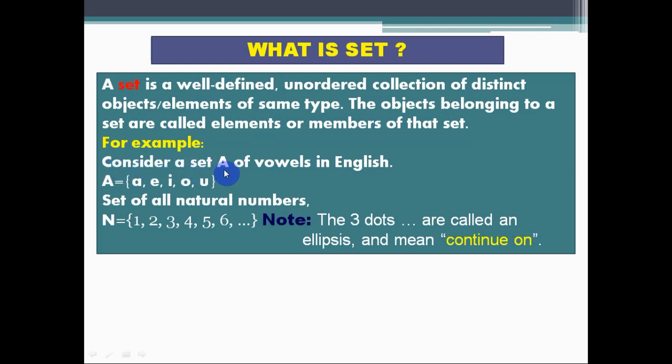Consider a set A of vowels in English. A equals to {a, e, i, o, u}. Here set A is a well-defined collection of distinct elements. You can see on the screen that a is an element, e is an element, i is an element, o is an element.